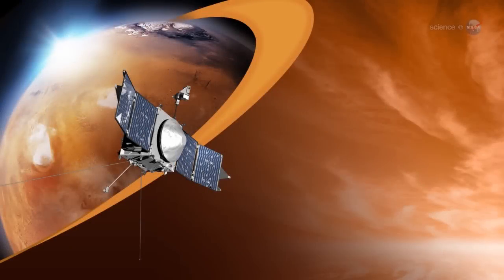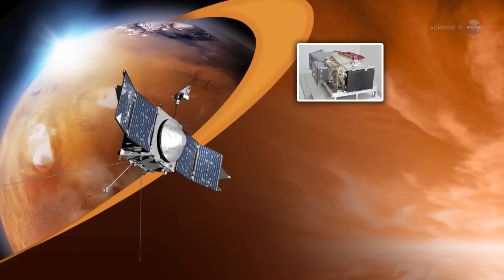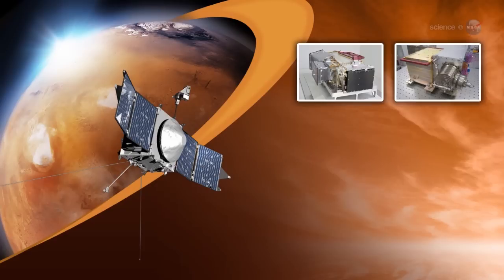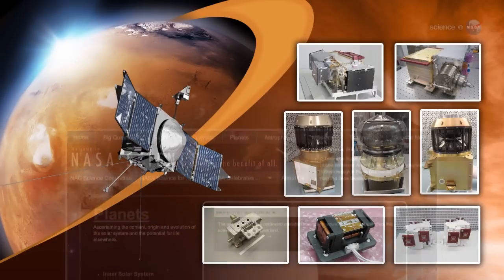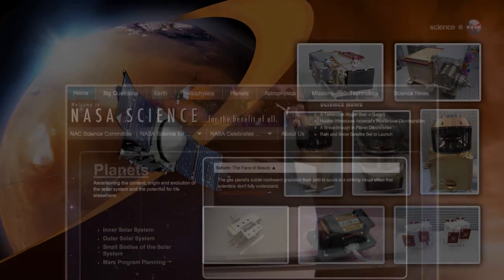This is just the beginning. IUVS is only one of three instrument suites on MAVEN. The Neutral Gas and Ion Mass Spectrometer from the Goddard Space Flight Center and the Particles and Fields Package from UC Berkeley will soon be making their own revelations about Mars. For more news from the Red Planet, stay tuned to science.nasa.gov.